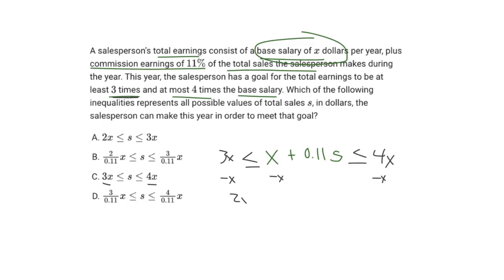And we end up getting 2X less than or equal to 0.11S is less than or equal to 3X.